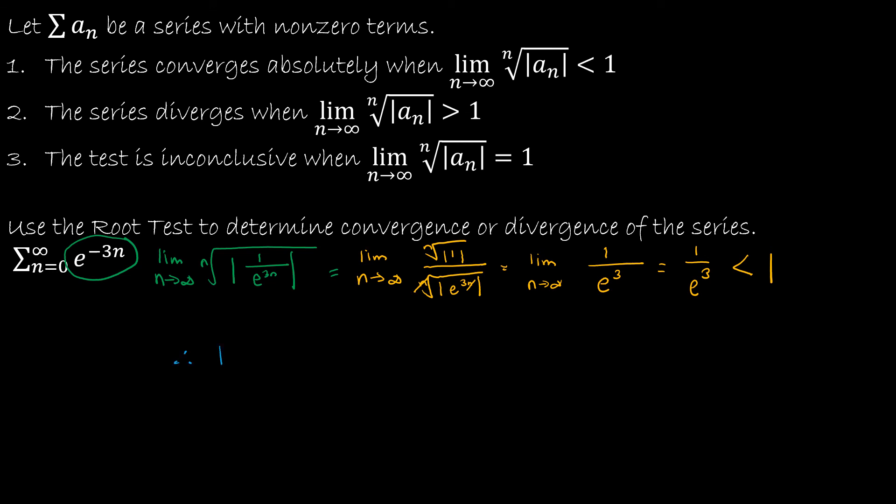So therefore, by the root test, we can say that the summation as n goes from 0 to infinity of e to the negative 3n converges absolutely, again because it was less than 1.